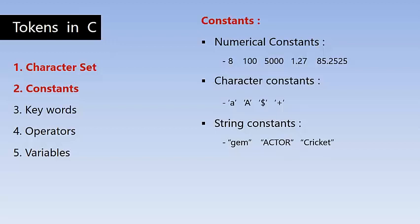For example, 'gem' is a string — a group of three characters; 'actor' is a group of five characters; 'cricket' is a group of seven characters. A string can have uppercase and lowercase letters together, or only uppercase, or only lowercase. Remember: characters are enclosed in single quotes and strings are enclosed in double quotes.